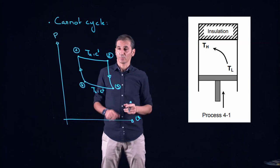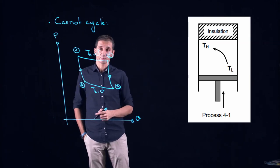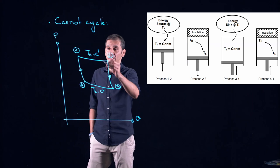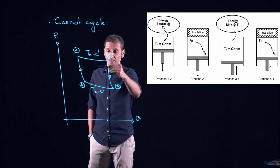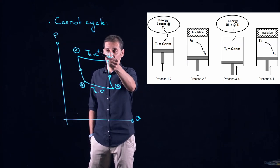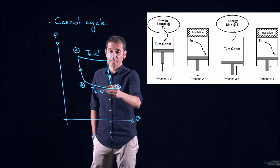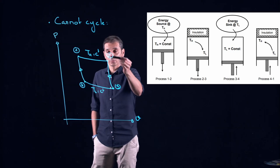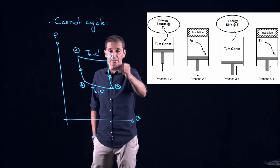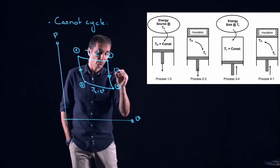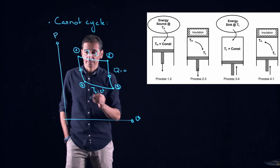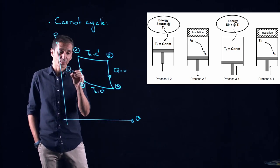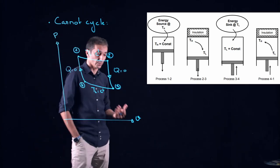Meaning that for a Carnot cycle what do we have? We have two isothermal: heat addition here isothermal heat addition at TH, here isothermal heat rejection at TL. And here we have two processes, this is an expansion with Q is equal to zero so an adiabatic and here it's compression with Q is equal to zero.